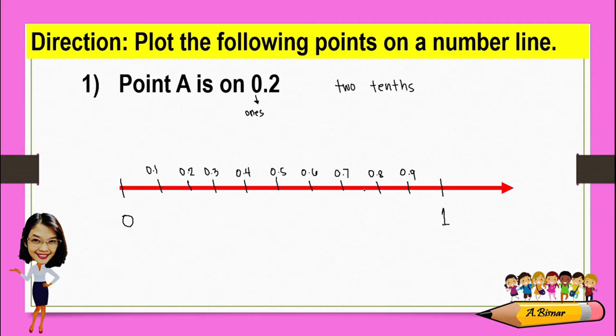From here, we can clearly see where 0.2 or two tenths is. It's here, which is our point A.